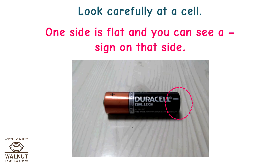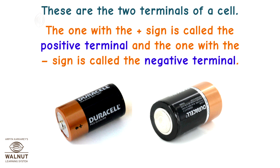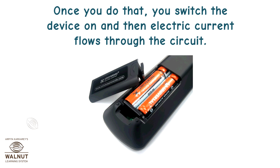Look carefully at the cell. One side is flat and you can see a minus sign on that side. One side has a raised circle and you can see a plus sign on that side. These are the two terminals of a cell. The one with the plus sign is called the positive terminal, and the one with the minus sign is called the negative terminal. Look in the cell compartment and you will see signs for how the cell has to go in. You have to follow the signs when you put the cell in. Once you do that, you switch the device on and electric current flows through the circuit.